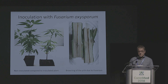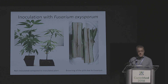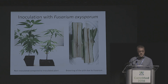Here are results from inoculation experiments. On your extreme left is a plant not inoculated with Fusarium; on the right is a plant with Fusarium — you see the stunting and yellowing — and on the far right is the internal discoloration of the pith due to infection by Fusarium. This is not a wilt Fusarium; this is a root and crown rot Fusarium, hence we see discoloration only in the pith and not in the vascular tissue.